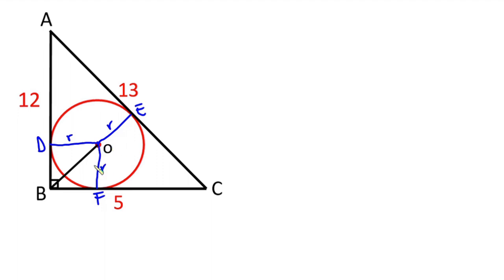Now you can see that this radius is perpendicular to line BC, so the angle over here is 90 degrees. This angle over here is also 90 degrees, and this side is also 90 degrees. So you can see that we have a square over here. One of the properties of a square is that all sides are equal, so the length DB is also R, and this side is also R.